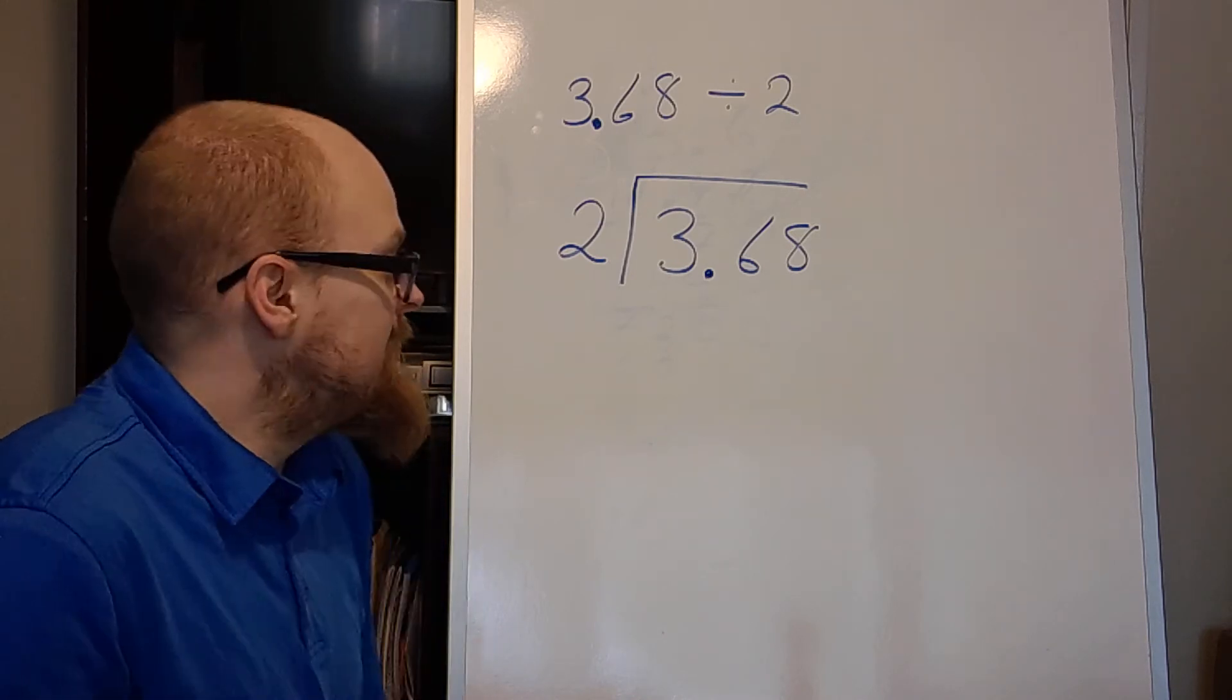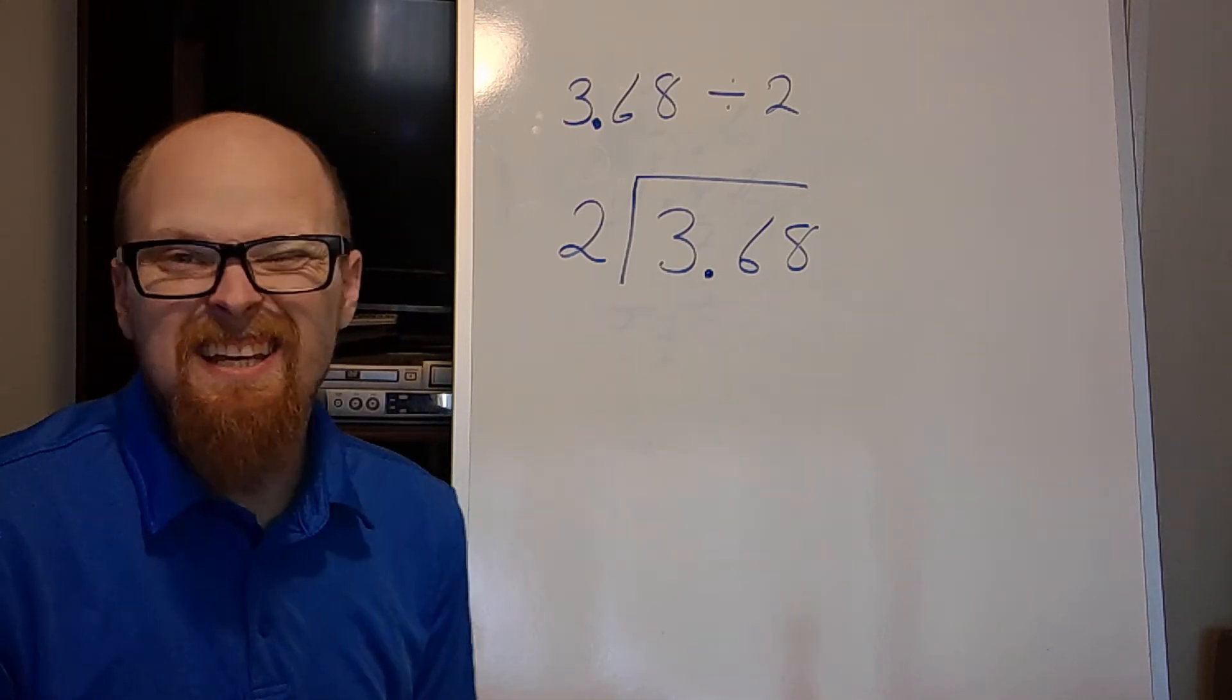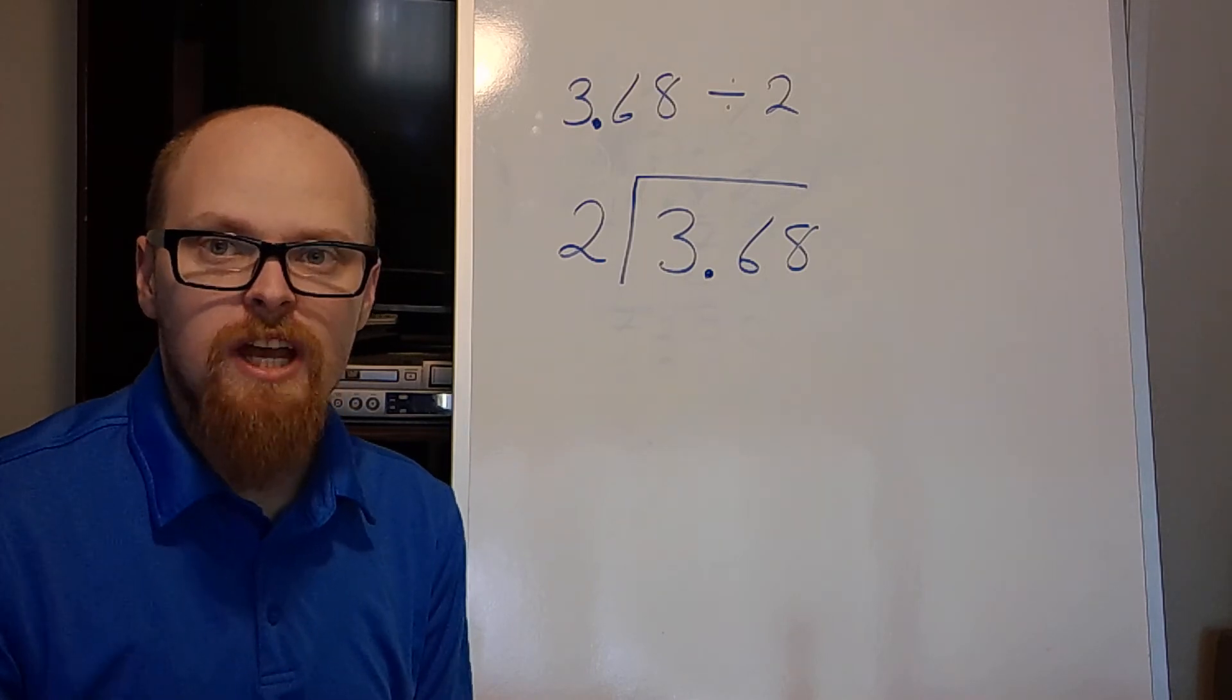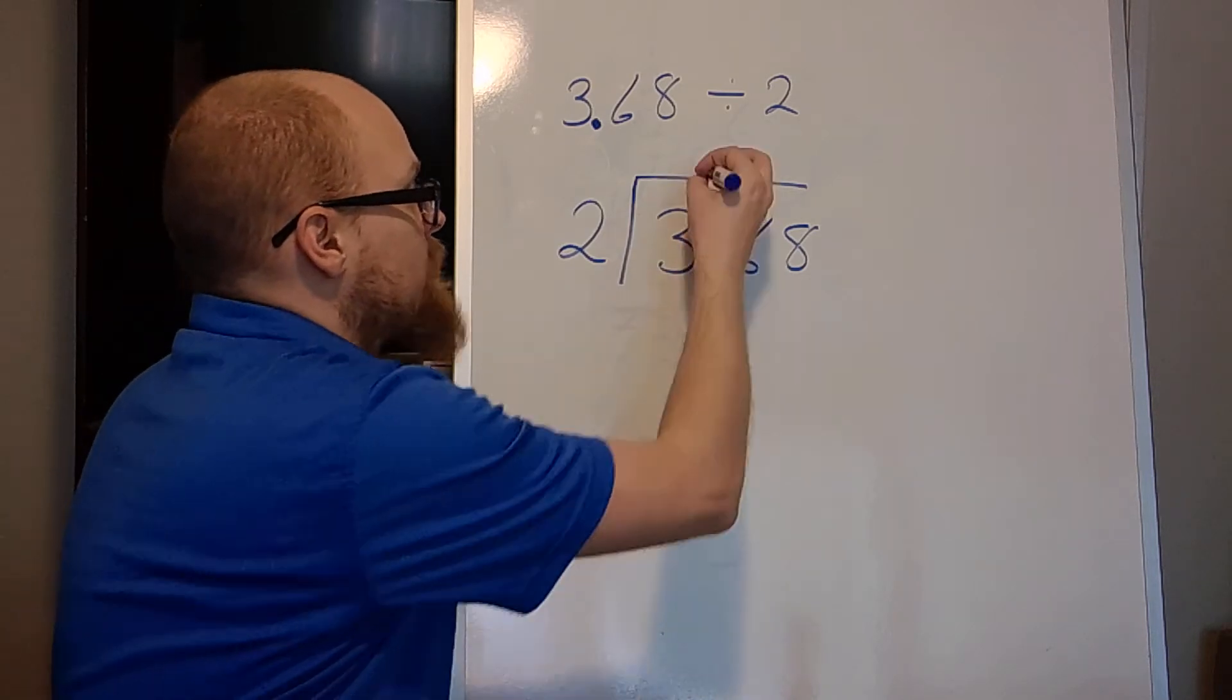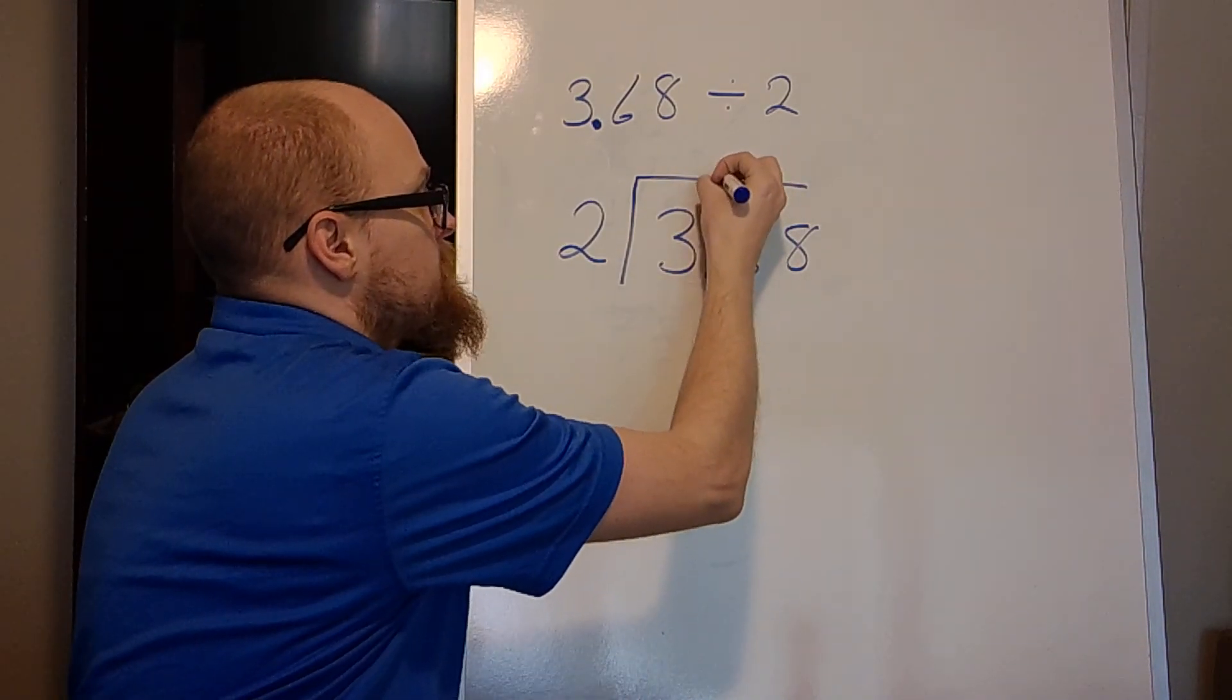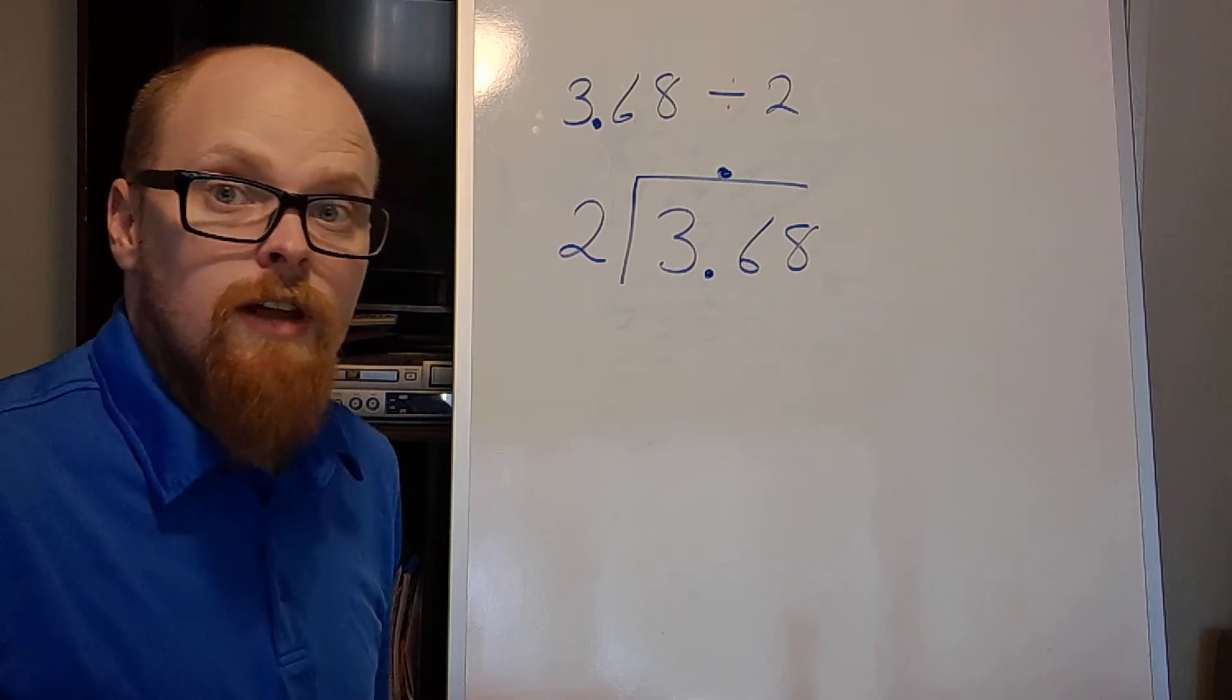Now if your decimal is inside, this is the easy decimal division to do. We don't change anything. We bring that decimal marker straight up and we know our answer is going to have a decimal in it. And from here you long division like normal.